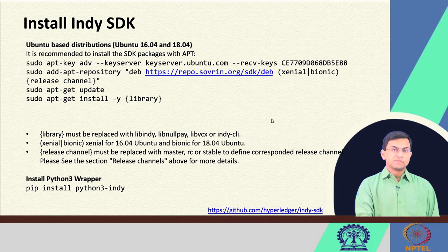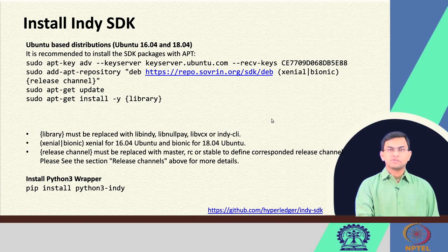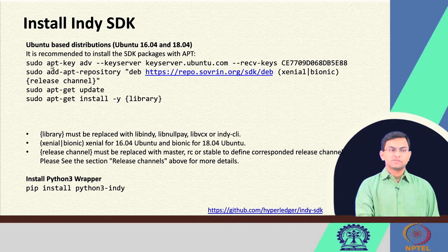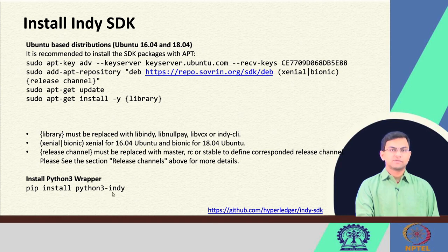Apart from the Indy node, we also need to connect to the Indy pool and perform transactions. For connecting to the pool and building applications that interact with it, we use the Indy SDK. Here are simple installation instructions for Ubuntu Linux. For other platforms, go to the Indy SDK repository for instructions. After installing the Indy SDK, which is called libindy, install the Python 3 wrappers using: pip install python3-indy.